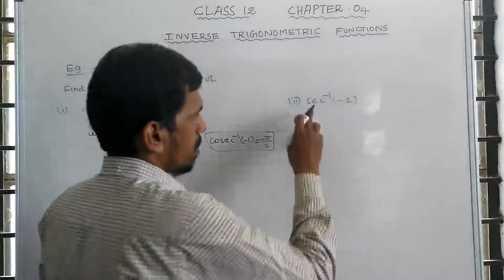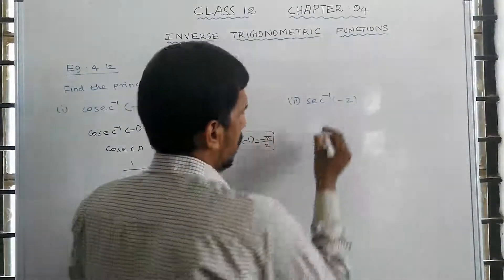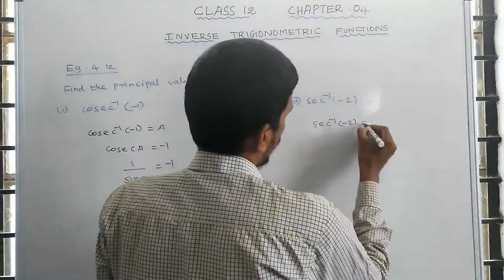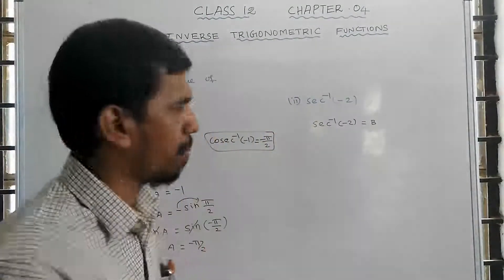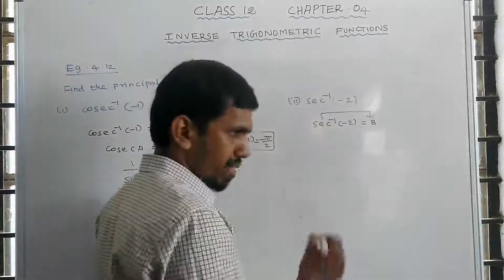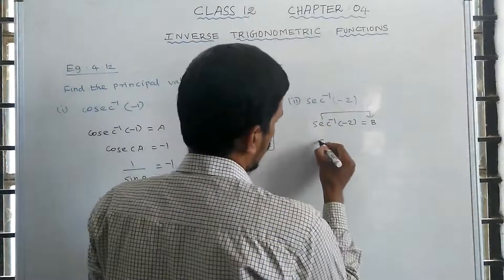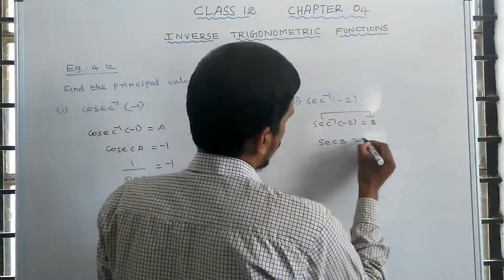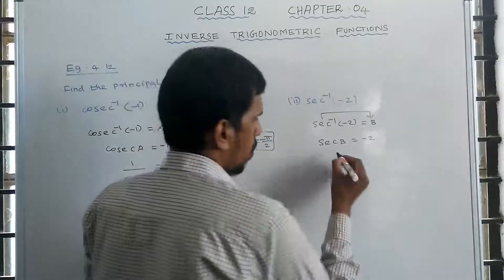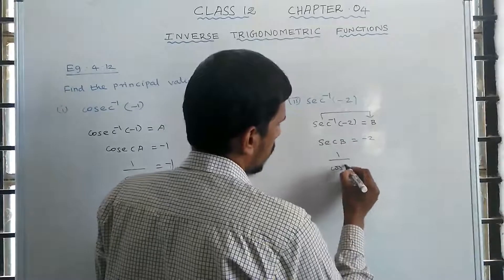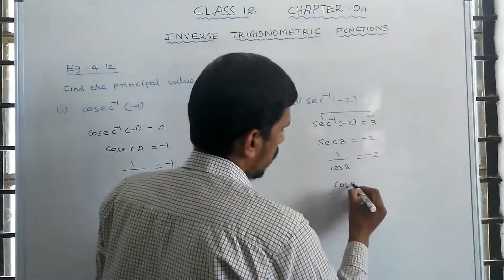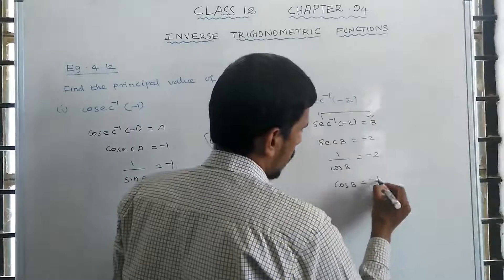Second sum: secant inverse of minus 2. Let secant inverse of minus 2 equal to b. So secant b equals minus 2, which means 1 divided by cos b equals minus 2. Taking the reciprocal, cos b equals minus 1 by 2.